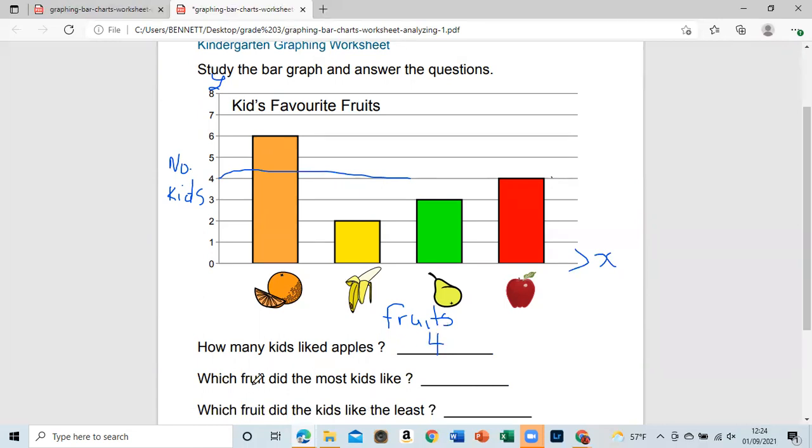Next one says, which fruit did the most kids like? And that would be this fruit right here. I'm going to say this one is orange, because it has the tallest bar. Six students like orange.